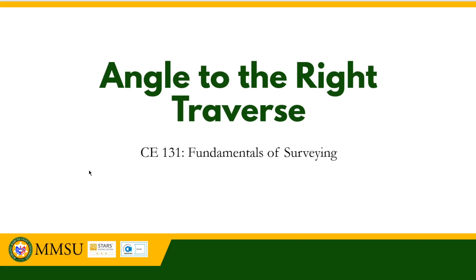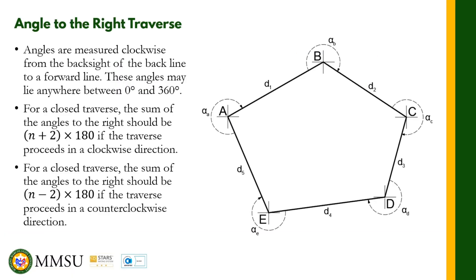Hello everybody and welcome back to our discussion in fundamentals of surveying. We are still talking about traversing and traverse measurement. We are now on the third method of traversing, and this method is called an angle to the right traverse. Angles are measured clockwise from the back side of the back line to a forward line. These angles may lie anywhere between zero degrees and 360 degrees.